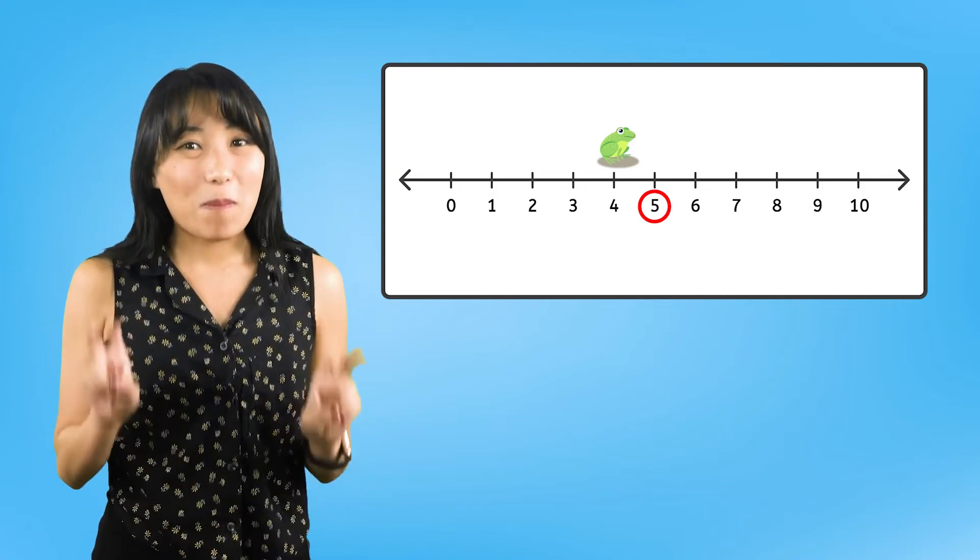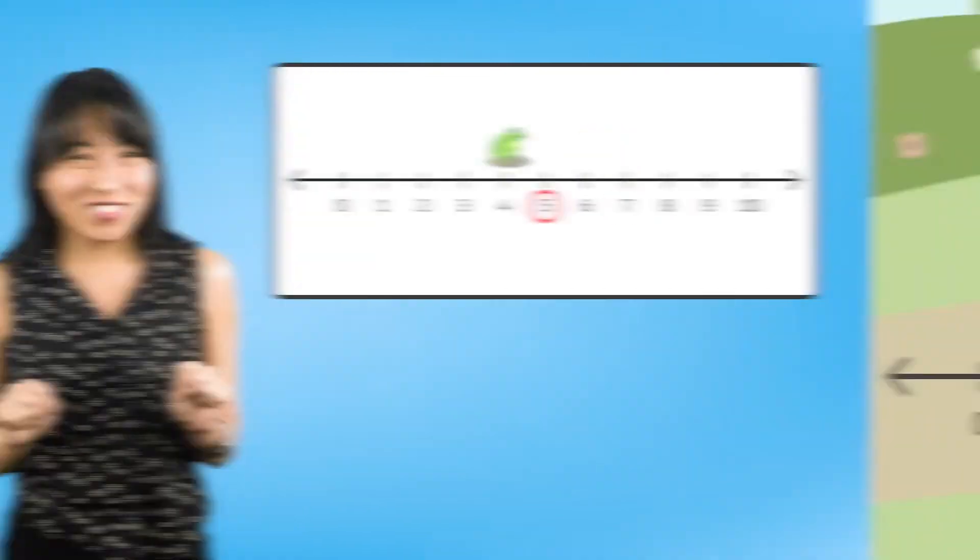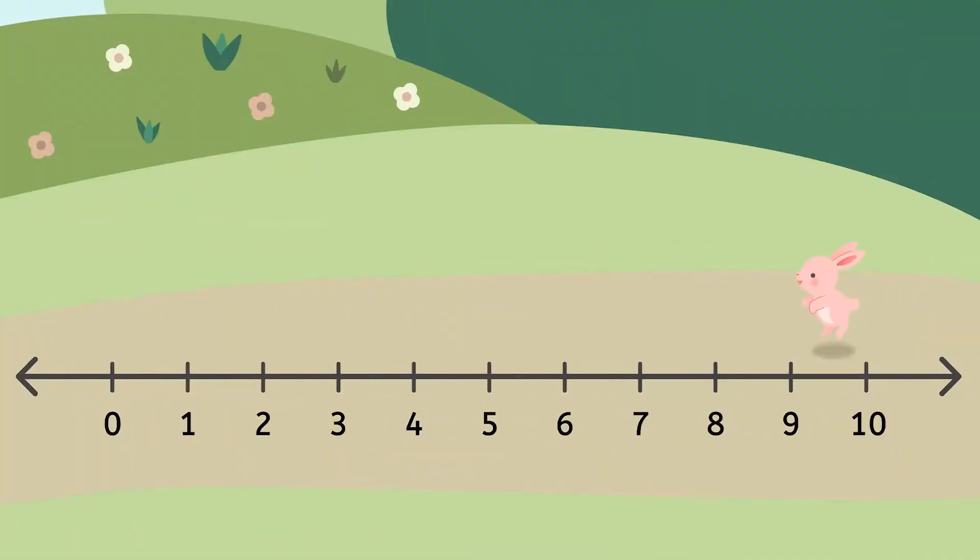Let's see what Backward Bunny is up to. Backward Bunny is hopping along the number line. And every time she hops, the number gets smaller. That means every time Backward Bunny hops backward, she lands on a number that is one less. So, if Bunny starts on the number four and hops onto the number three, we can say that three is one less than four.